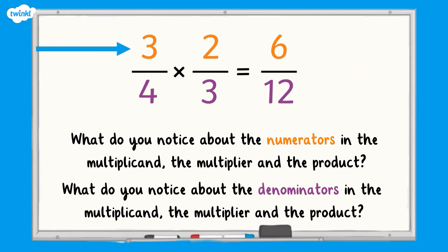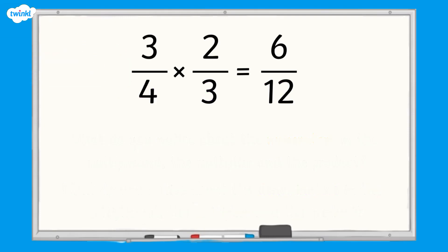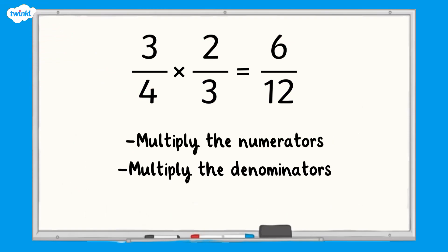Looking at the numerators, three multiplied by two equals six. Looking at the denominators, four multiplied by three equals twelve. So when we multiply fractions, we can multiply the numerators to find the numerator and then multiply the denominators to find the denominator.